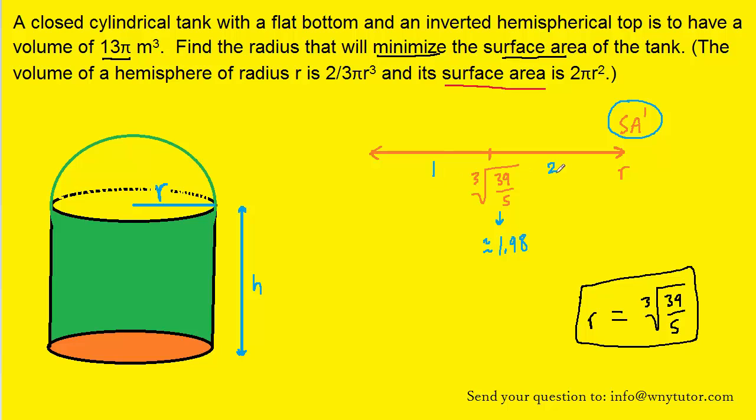Let's bring back the first derivative. Now if you plug in 1 for the radius in the first derivative, you will get a negative result. Now when the first derivative is negative, that of course means that the surface area function is decreasing. If you plug 2 into the first derivative, you will get a positive result. It's probably best to use a calculator to prove that to yourself.